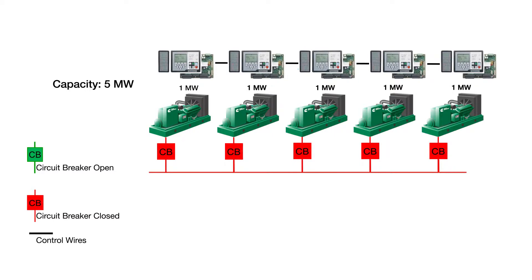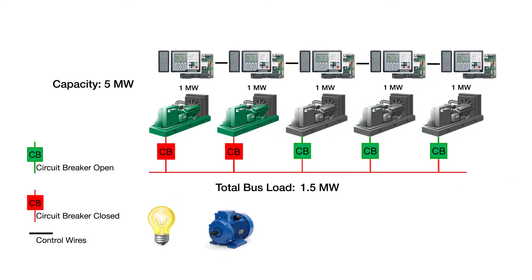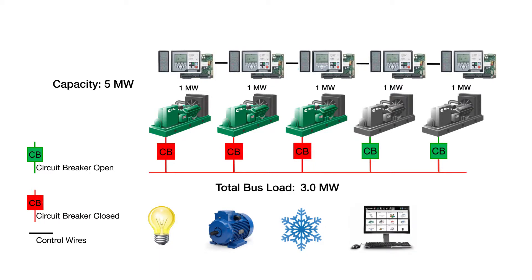Simply put, the load demand algorithm calculates the total power capacity on the AC bus and monitors the load. If the capacity is significantly higher than the connected loads, generator sets are stopped and the minimum number needed stay connected.